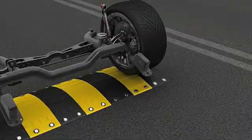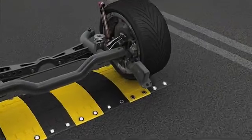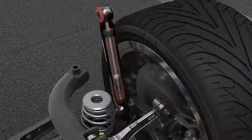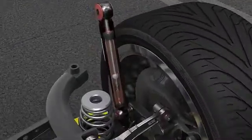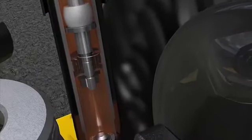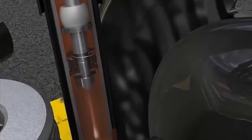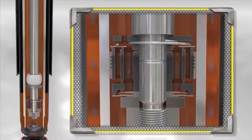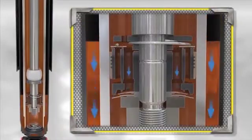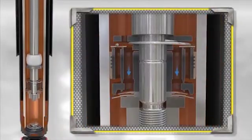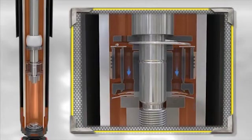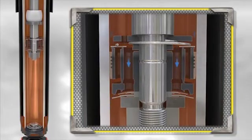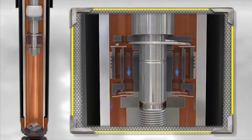During the rebound movement, the piston rod leaves the working chamber in a controlled manner due to the effect of the rebound valve. This movement creates a vacuum, which causes oil suction from the reserve chamber, which is equivalent to the volume of the piston rod having left the working chamber during the rebound movement. Thanks to this effect, the working chamber is constantly full of oil.